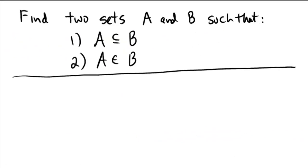This problem asks us to find two sets A and B such that A is both a subset of B and also A has to be an element of B. So that means the set A is going to have to be an element of set B, and A itself is going to be a set, so B is going to be a set containing sets.